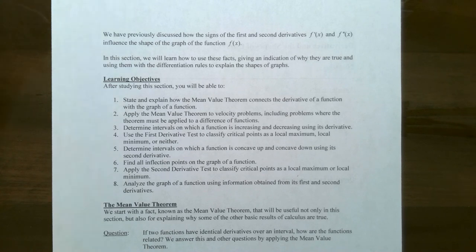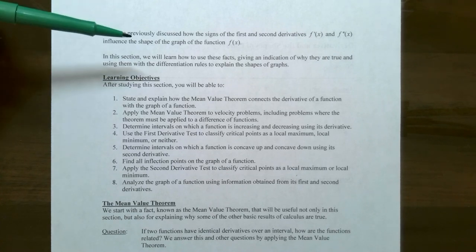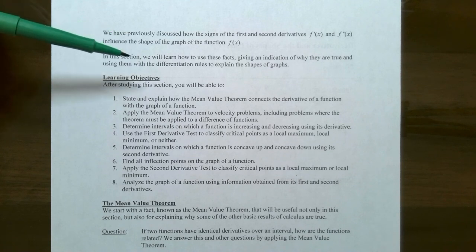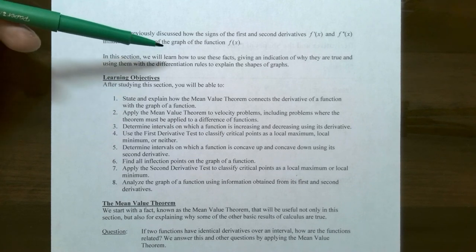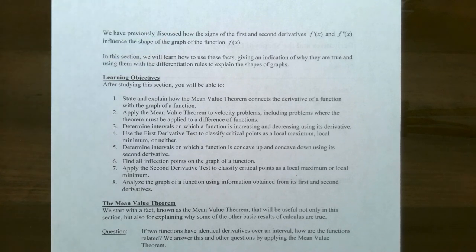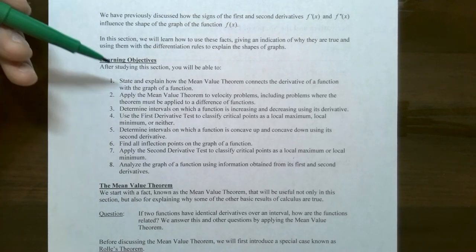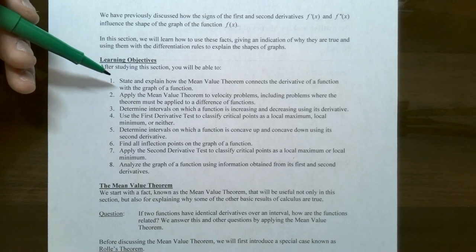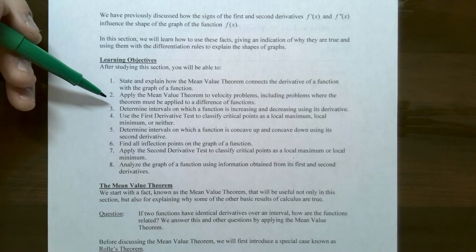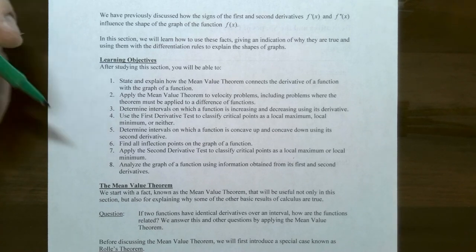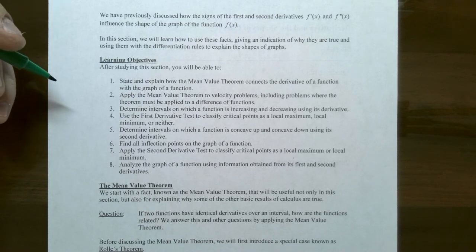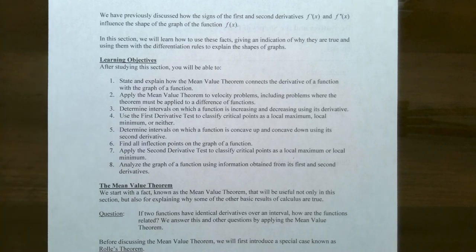We have seen previously that the signs of the first and second derivatives influence the shape of the graph of a function f of x. This section is going to discuss how we can use these facts — how the sign of the derivative determines the shape of the original graph — and we're going to use them along with the differentiation rules to explain the shapes of various functions' graphs. In this first video, we're going to cover the first two objectives: state and explain how the mean value theorem connects the derivative of a function with the graph of a function, and apply the mean value theorem to velocity problems, including problems where the theorem must be applied to a difference of functions. We'll cover the next objectives in the other remaining videos.